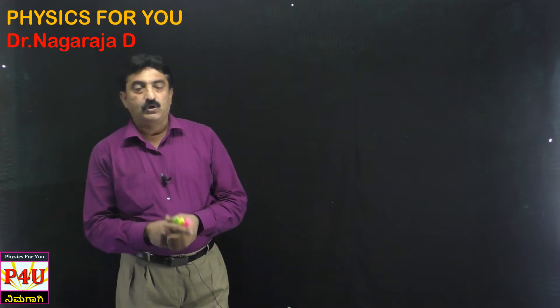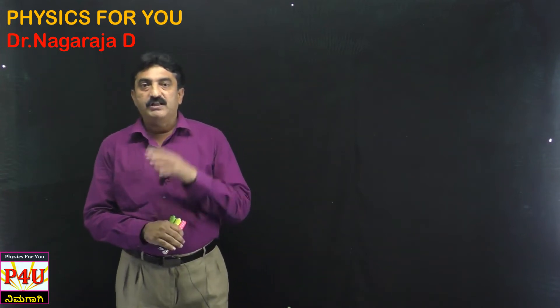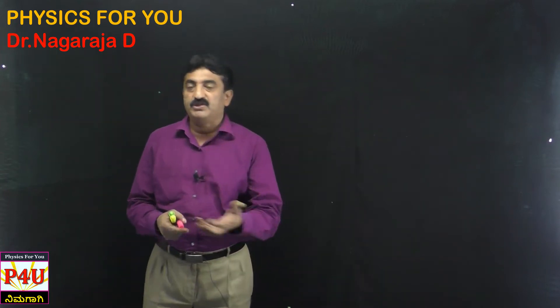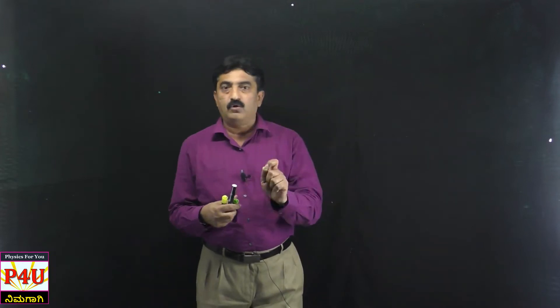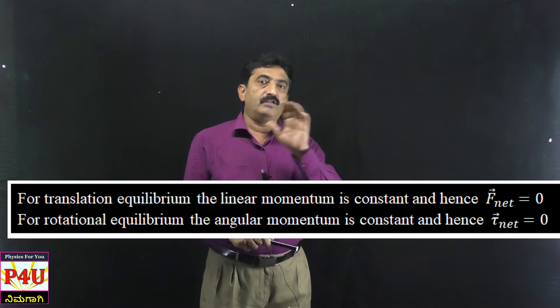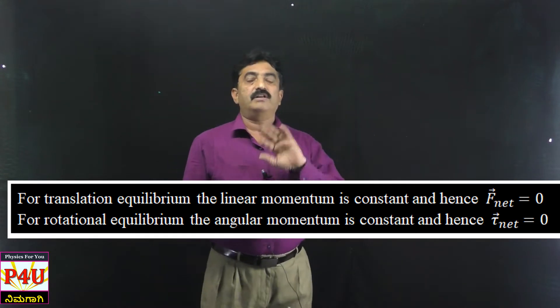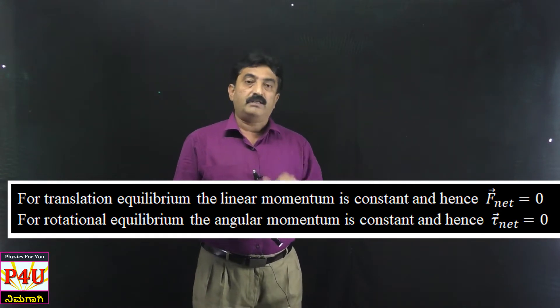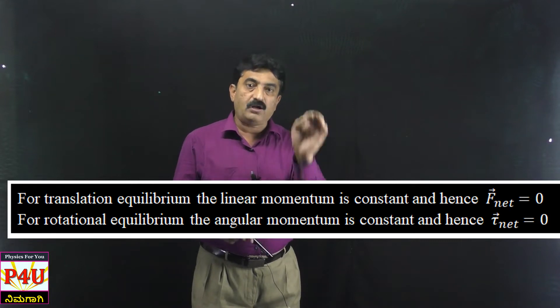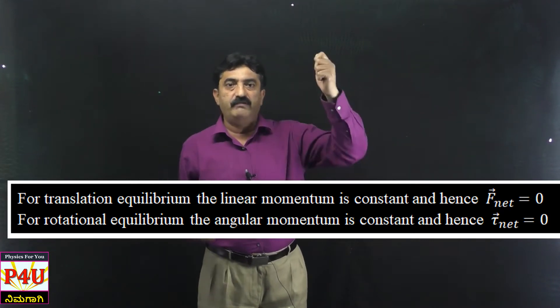Good morning, welcome back dear students. In my last video, I was talking about equilibrium of a rigid body — rotational equilibrium and translatory equilibrium, and different types of rotations, pure rotations and precession. For equilibrium, sigma F must be 0 (no translatory motion) and sigma tau must be 0 (no rotational motion). An example of torque is the steering wheel.